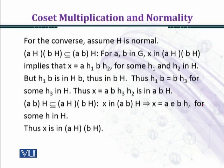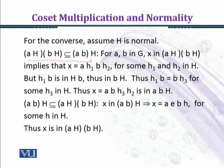Now we shall prove the converse statement. Assume H is normal, and we want to prove that AH · BH = ABH, that is, the definition of coset multiplication. We shall establish this by first proving that AH · BH is contained in ABH, and then proving ABH is contained in AH · BH.